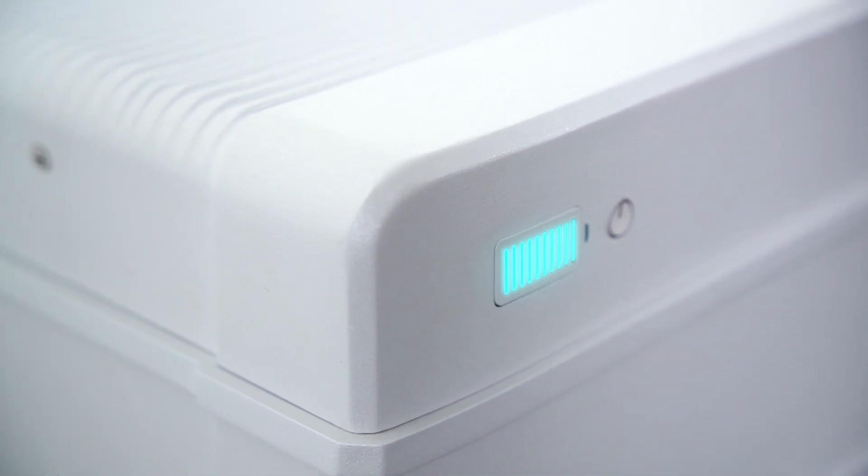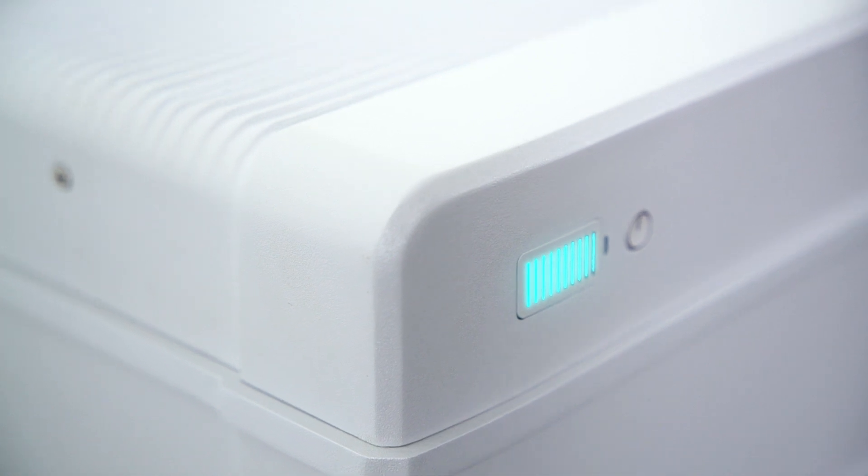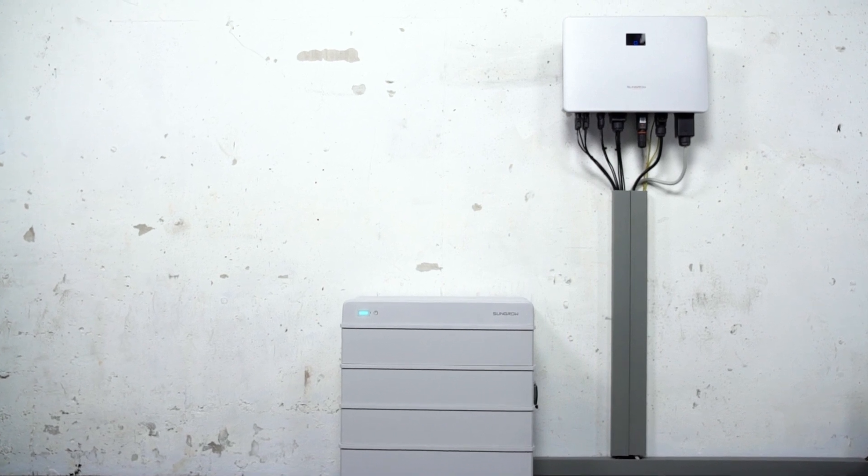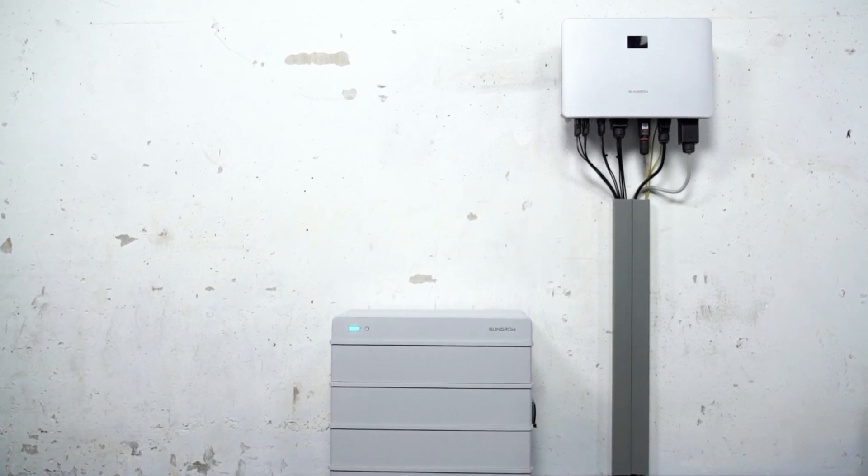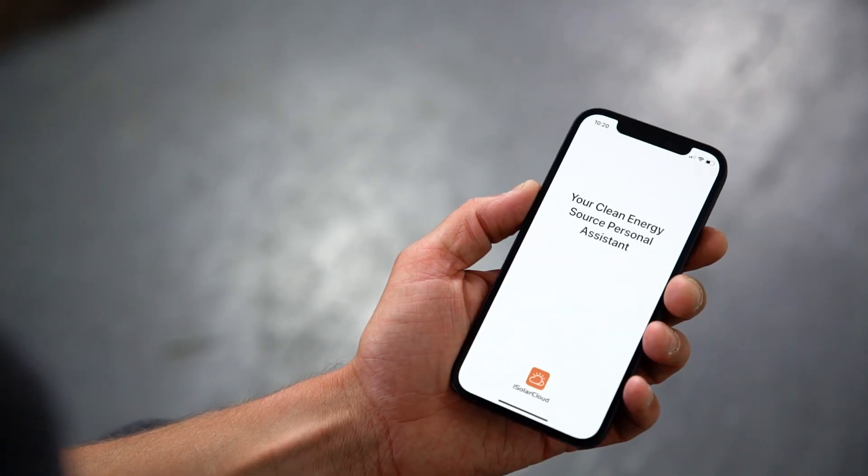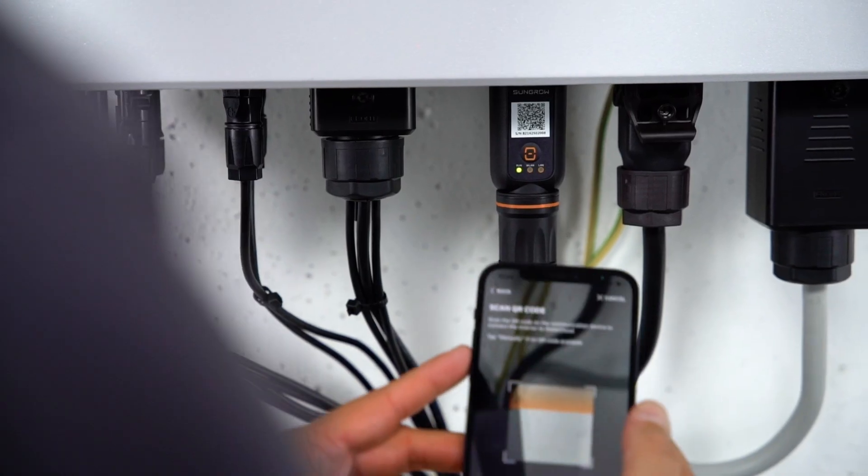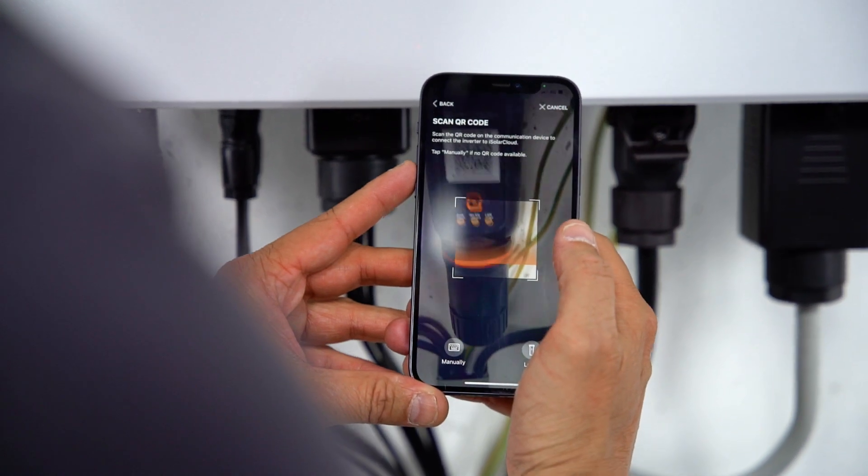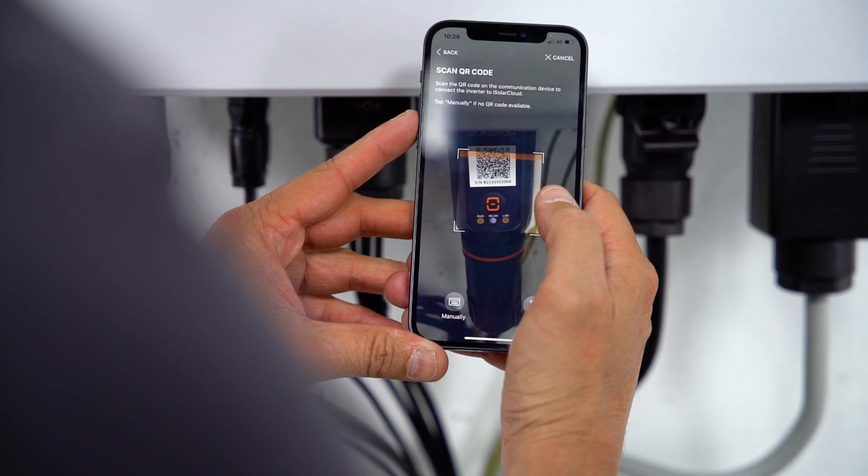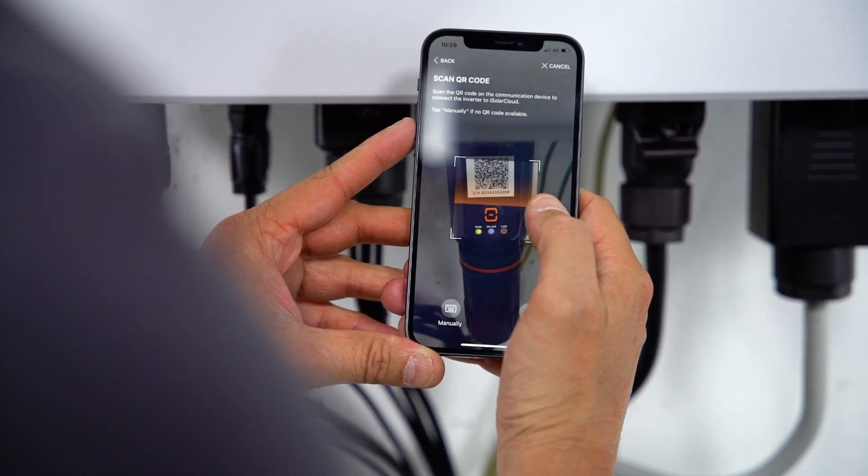If this is not the case, please refer to the manual, where you will find a breakdown of the different light signals. That was it. The system is ready to run. If you already have set up the hybrid inverter in the iSolar Cloud app, the battery will automatically be detected and added to the system. If you still need to set up the whole system, you may find a detailed commissioning video on our YouTube channel.